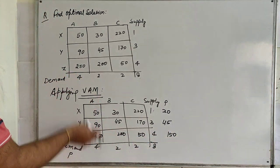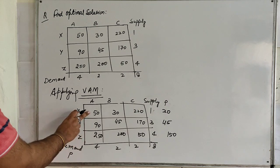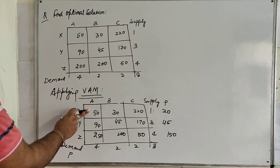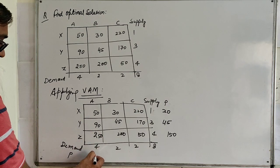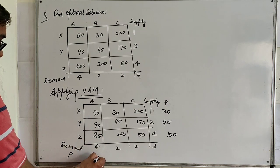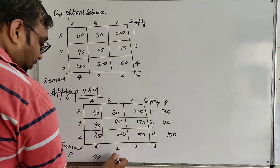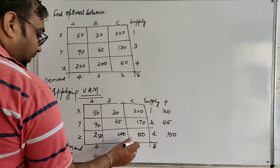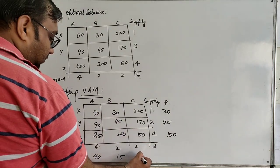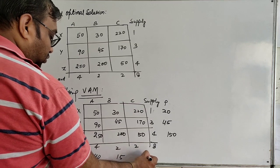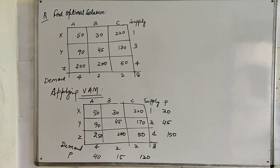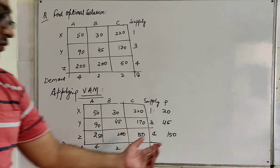Moving on to the columns: the first column has lowest 50 and second lowest 90, so the difference is 40. In the second column, the penalty is 15. And in the third column, the penalty is 120. Among all these penalties, we have to select the maximum penalty, which is 150.